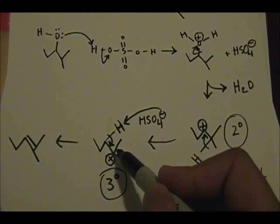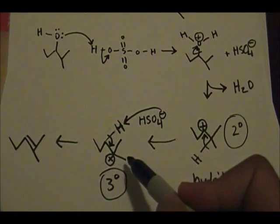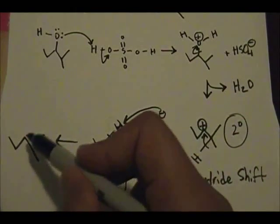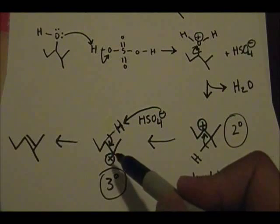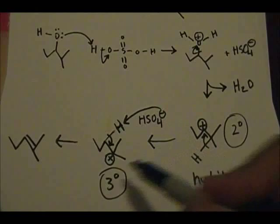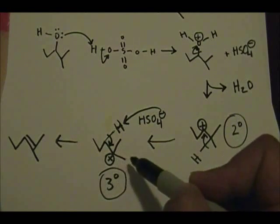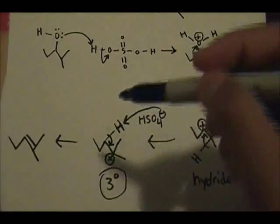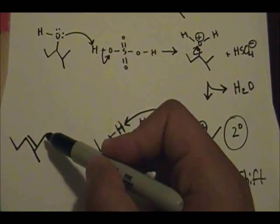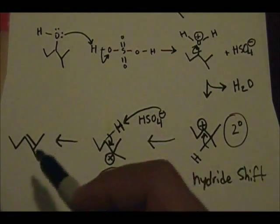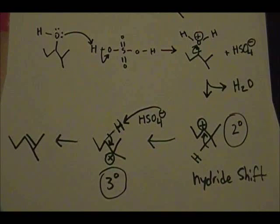You can form an alkene at three different positions: between this carbon and this carbon (disubstituted), between this other pair of carbons (also disubstituted — one substituent on each side), or the way we formed it (trisubstituted — one substituent here, one here, another here). So it's a trisubstituted alkene product. You must obey Zaitsev's rule and form the most substituted alkene product, because that generates the more stable alkene.